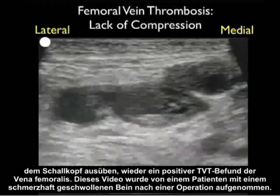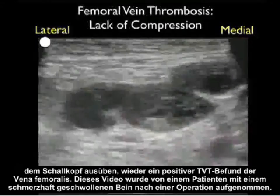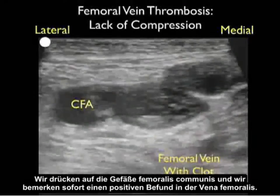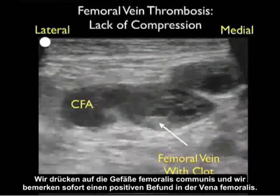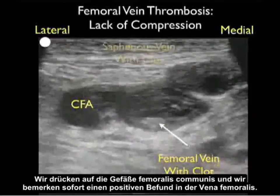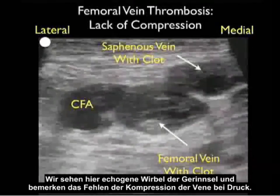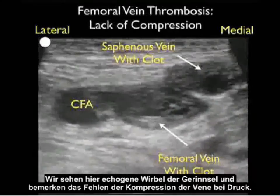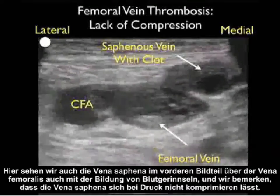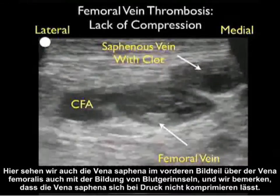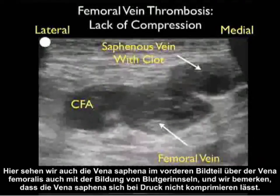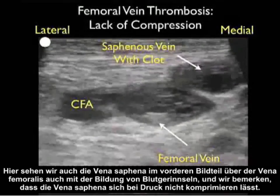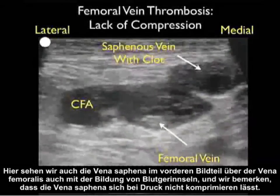This video clip was taken from a post-surgical patient with a painful swollen leg. We're applying compression down to the common femoral vessels and notice right away a positive finding within the femoral vein. We see echogenic swirls of clot and notice the failure of compression of the vein with probe pressure. We also see the saphenous vein towards the anterior part of the image above the femoral vein, also with clot formation, and the saphenous vein also fails to compress with probe pressure.